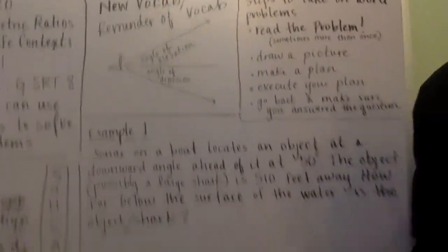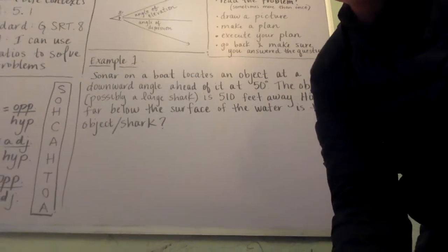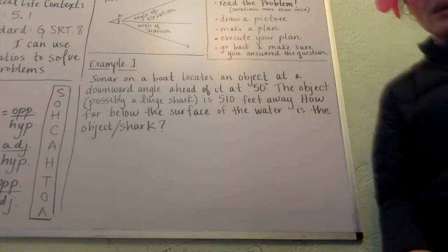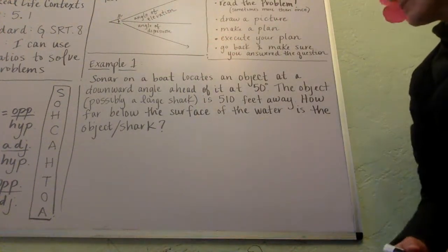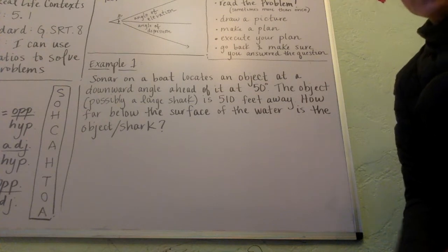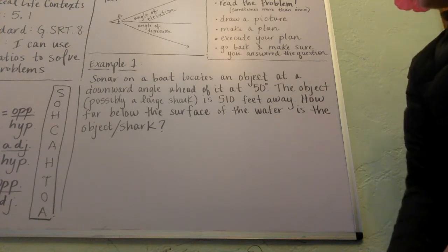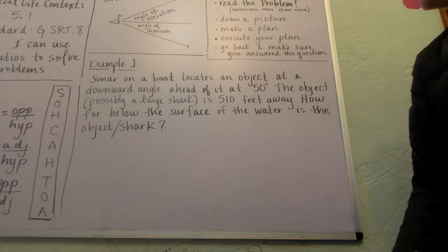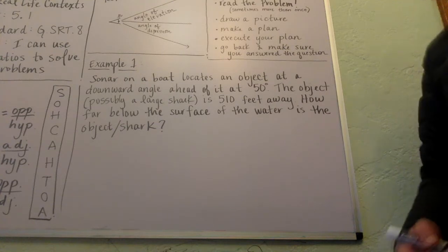Here's our first example. Pause if you need to get the problem written down. I'm going to read this problem as you're reading it. Sonar on a boat locates an object at a downward angle ahead of it at a 50-degree angle. The object, which quite possibly could be a shark, is 510 feet away. How far below the surface of the water is the object or shark?